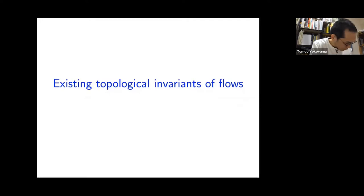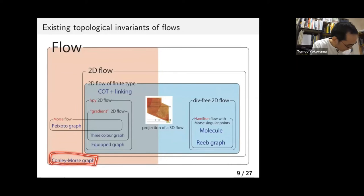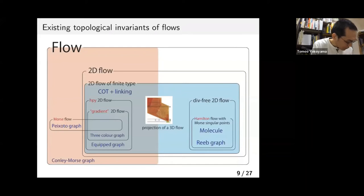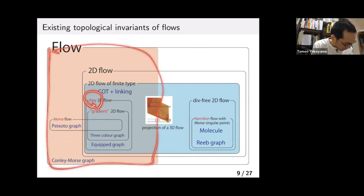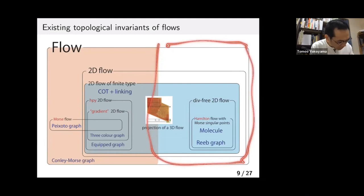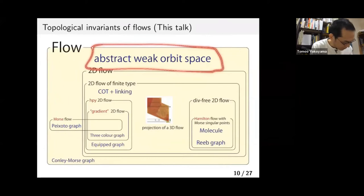I introduce some existing topological invariants of flows. The Conley-Morse graph is one of the important topological invariants. The Conley-Morse graph is implemented and widely used — it is implemented by Mischaikow, Okubo, and others. However, this invariant can capture only hyperbolic dynamics. On the other hand, there is Hamiltonian recurrent and divergent dynamics that we'd like to capture. Therefore, we introduce this new topological invariant.